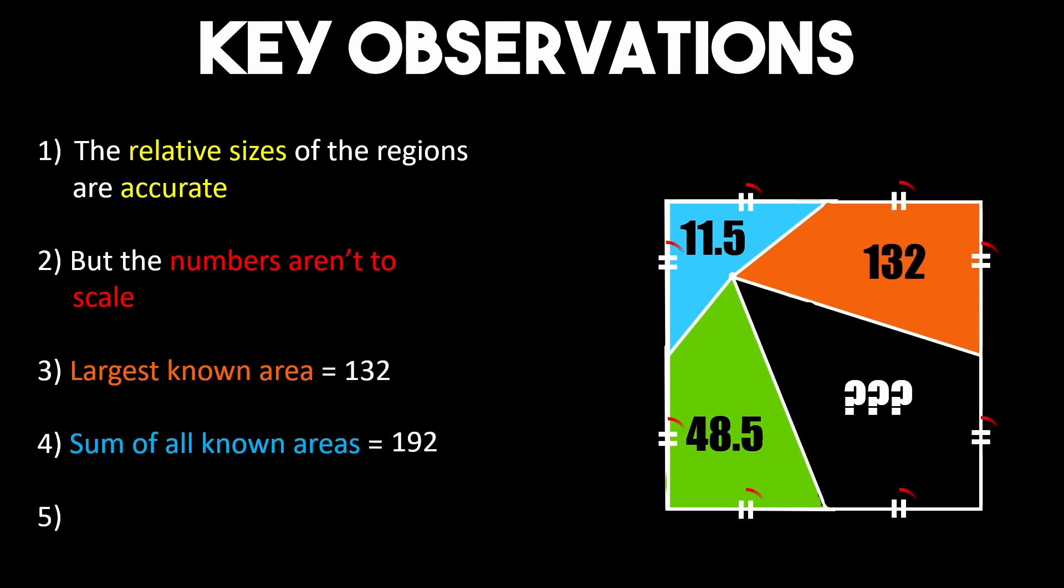On to our last observation because of these congruent lines we can see that each side of our shape has the same length which means we can conclusively call this a square.